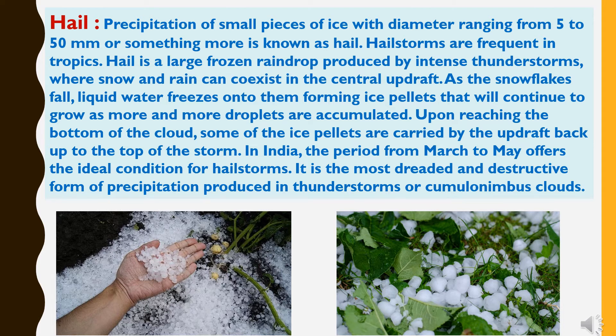Upon reaching the bottom of the clouds, some of the ice pellets are carried by the updraft back up to the top of the storm. In India, the period from March to May offers ideal conditions for hailstorms. It is the most dreaded and destructive form of precipitation, produced in thunderstorms or cumulonimbus clouds.